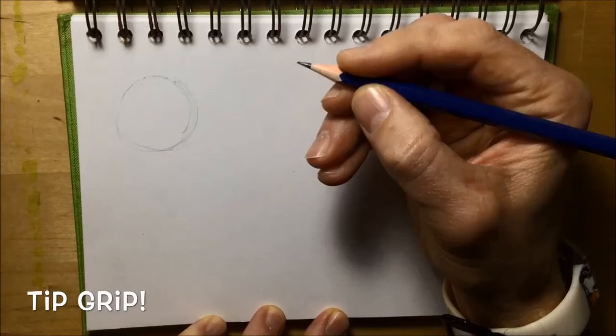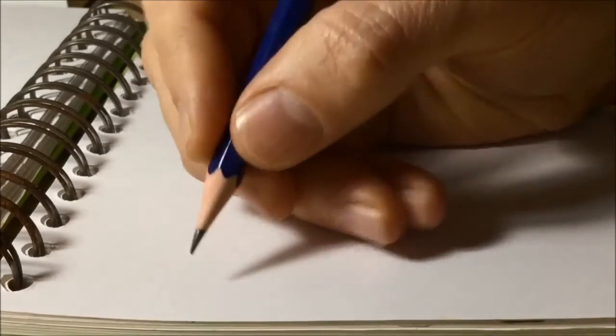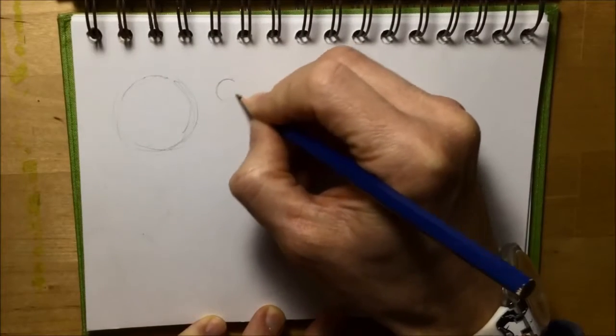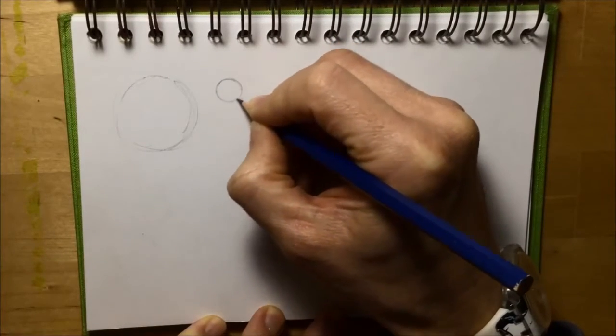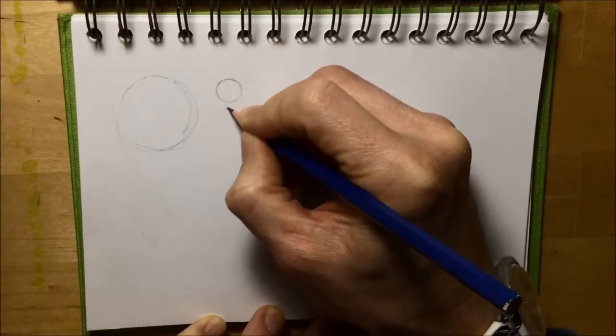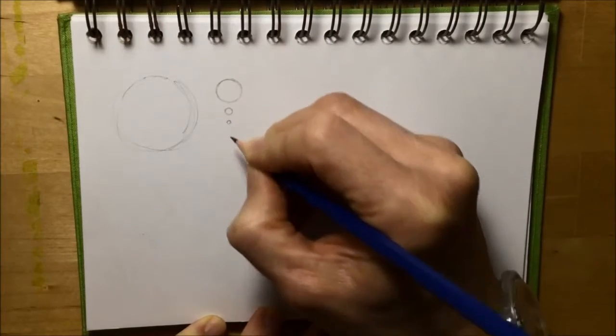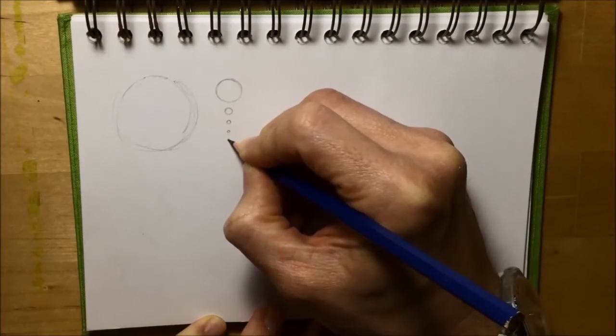After doing my initial sketching using the mid barrel grip, I change to the tip grip, which is me holding the pencil just up from the tip. This is going to give me a lot more control. I'm able to press down a little bit harder with the lines and also get a greater level of detail because I've got a greater level of control.